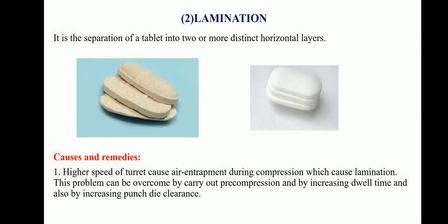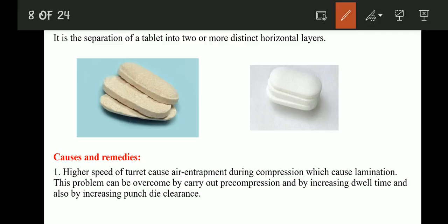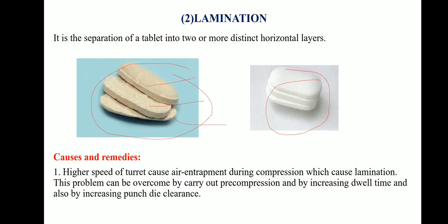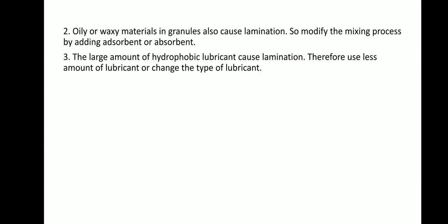The next process-related defect is lamination — the separation of a tablet into two or more distinct horizontal layers. Causes and remedies: First, high turret speed causes air entrapment during compression leading to lamination; overcome this by pre-compression, increasing dwell time, and increasing punch die clearance. Second, oily or waxy materials in granules cause lamination; modify the mixing process by adding adsorbents. Third, a large amount of hydrophobic lubricants causes lamination; use less lubricant or change the type.